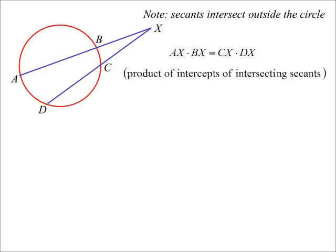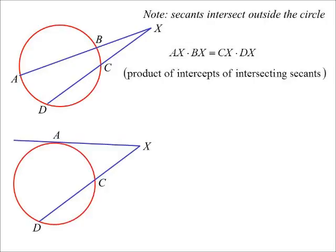There's a third one where we have a tangent and a secant, but I can still use the same idea. The actual theorem is AX squared. But what I think about here is, instead of thinking of this as a single point, I think of it as a chord AA. So the endpoint of the chord A to the point of intersection X, times the endpoint of the chord A to the point of intersection X, is equal to the endpoint DX times the endpoint CX.